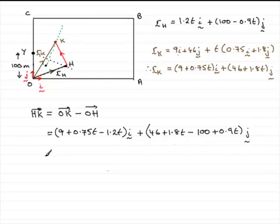So cleaning this up, what you've got then is the 9. And you've got 0.75t minus 1.2t is minus 0.45t. And that's in the i direction. And then, for the j's, we've got 1.8t plus 0.9t. So that's going to be 2.7t. So 2.7t.